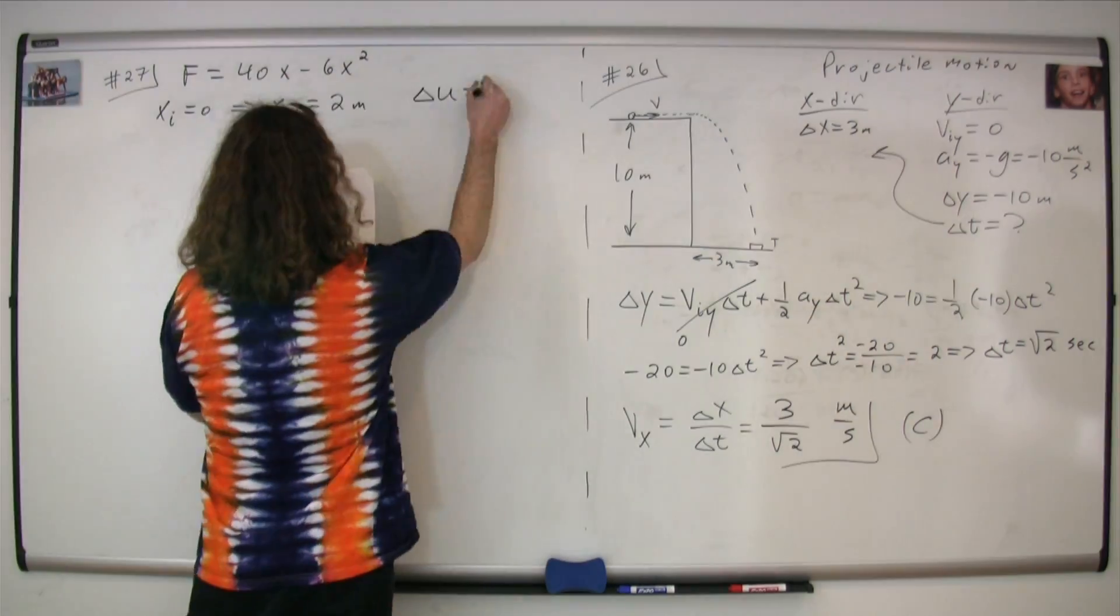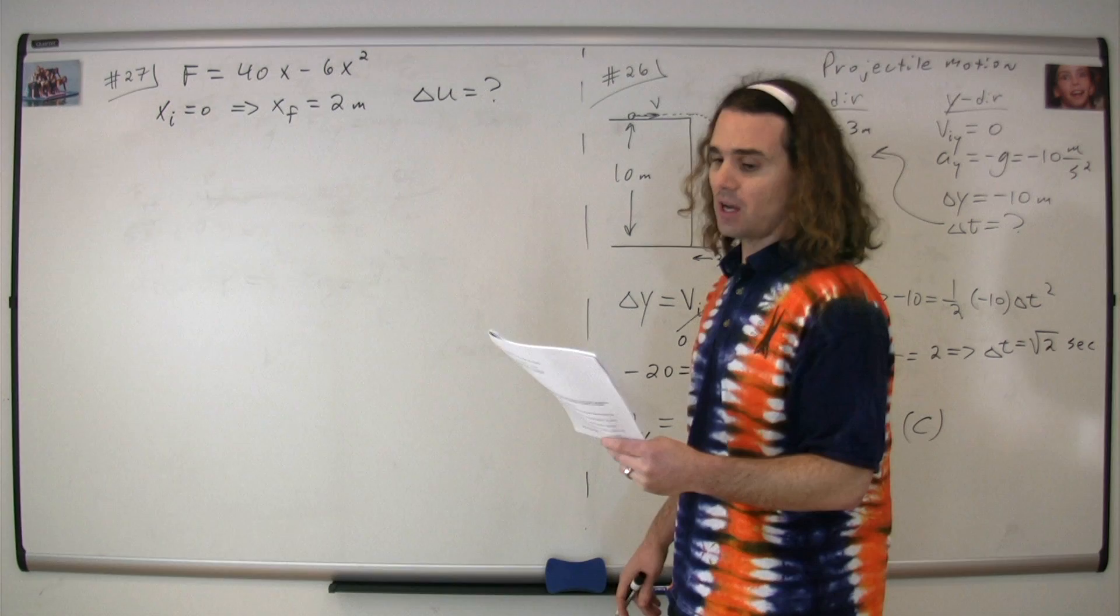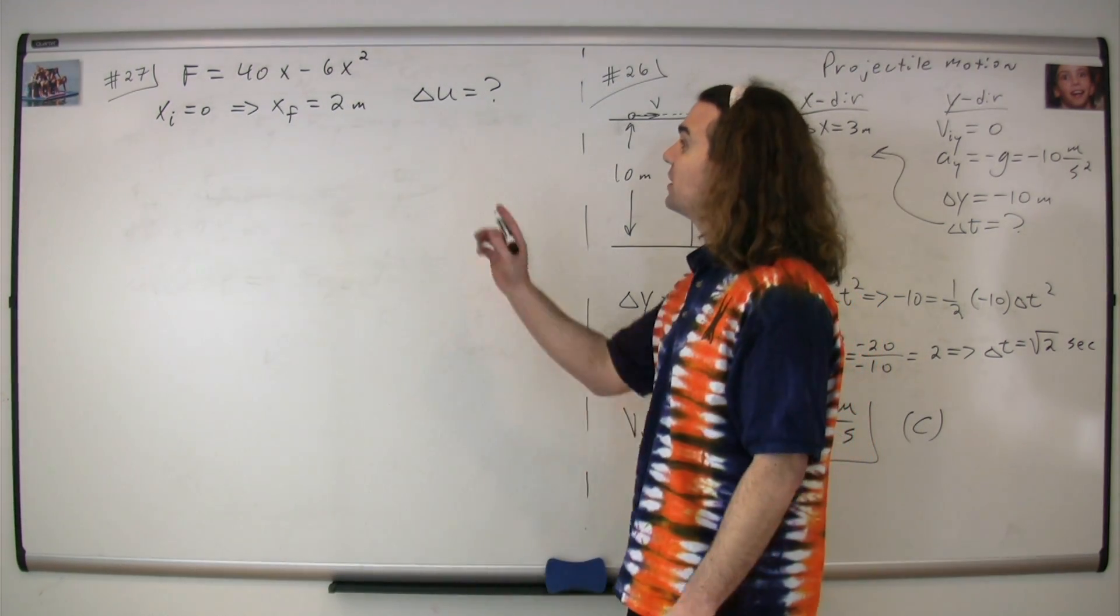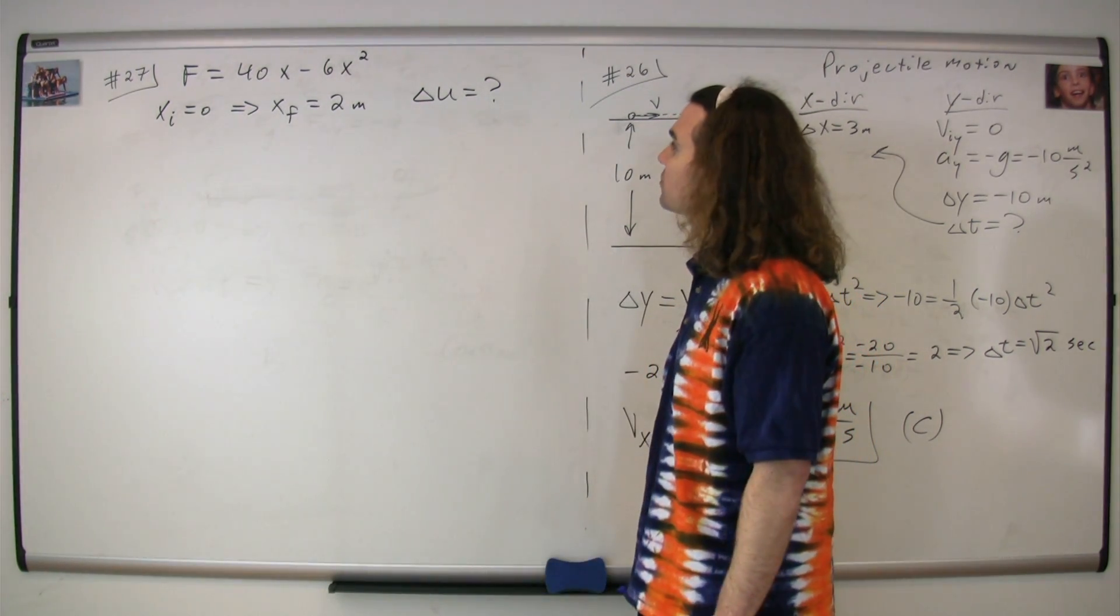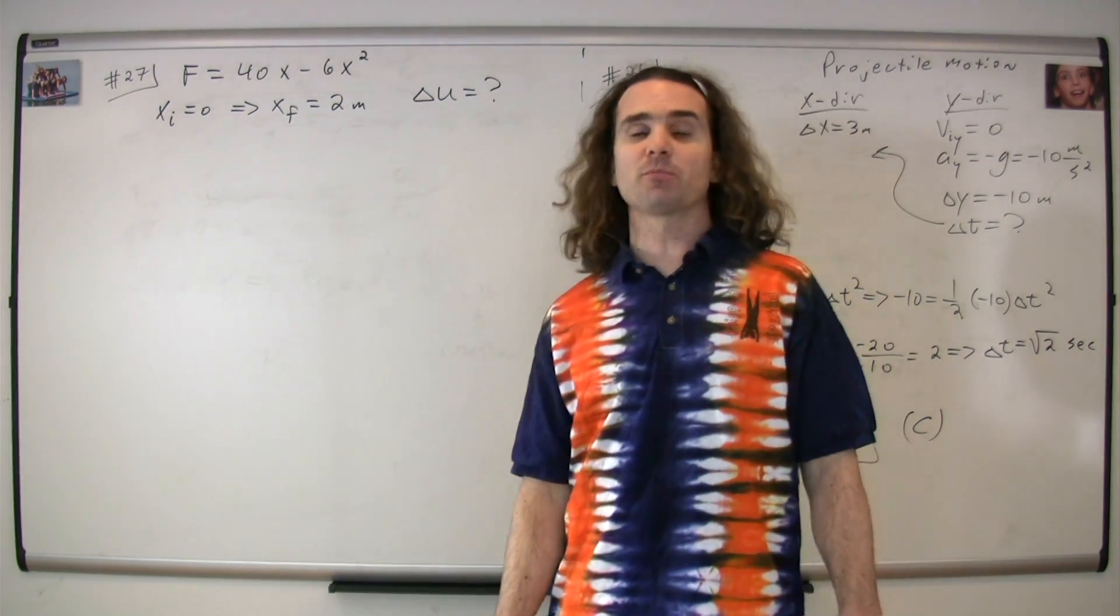Question 27. We have an expression for the force on a spring, and we know the initial position and the final position of the spring. We're looking for the change in potential energy of the spring.